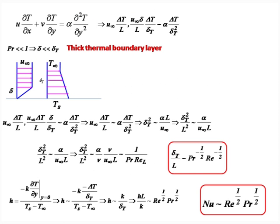Now let us see what we get for thermal boundary layer thickness. I am taking Prandtl number less than 1. Prandtl number less than 1 always results in a thick thermal boundary layer. This occurs in liquid metals like lead and mercury — indium, tin — which typically have a Prandtl number of 0.02, 0.003 and so on, very low Prandtl number.